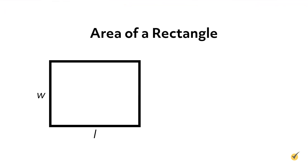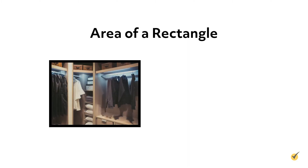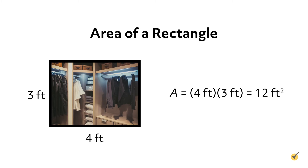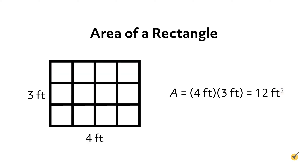Now let's take a look at finding the areas of these shapes, starting with the rectangle. To find the area of a rectangle, we multiply the length by the width. This gives us the area formula A equals L times W, where L represents length and W represents width. Suppose we have a closet with a rectangular floor that measures 4 feet long and 3 feet wide. The area is A equals 4 feet times 3 feet, which is equal to 12 square feet. Because we multiply two units of feet by each other, we square that unit in our answer. Area is always measured in square units. We can subdivide the rectangle every foot along the length and width into 12 square feet — the number of tiles it takes to tile the floor.